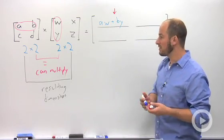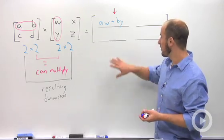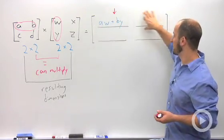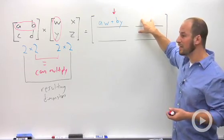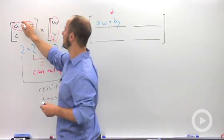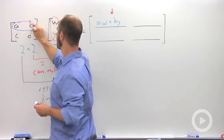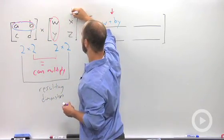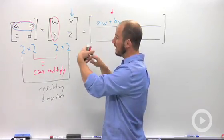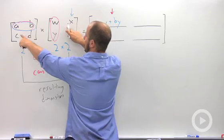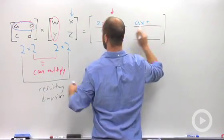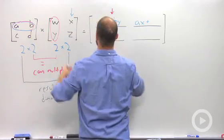A little bit confusing, but let's do another one to see if we have it. So for this entry right here, it is in the first row, second column. So again, we're going to look at the first row over here, but this time we have switched over to the second column. So again, going down the row and down the column, we take a times x plus b times z.